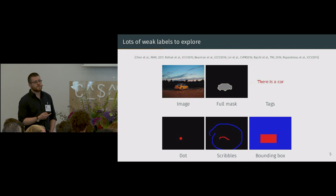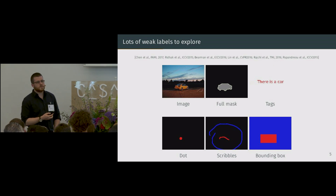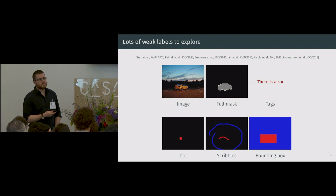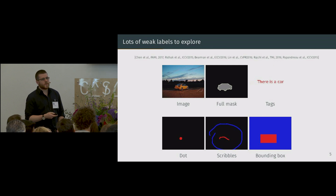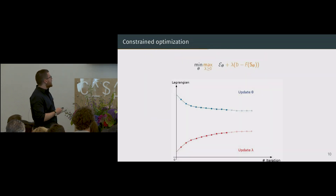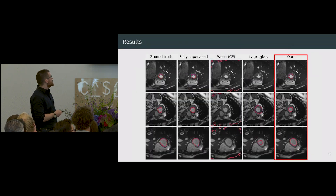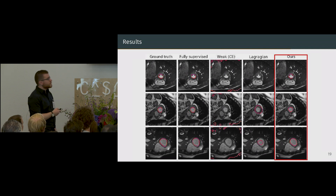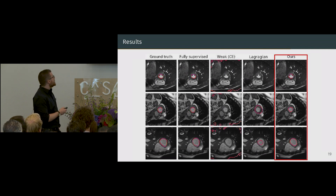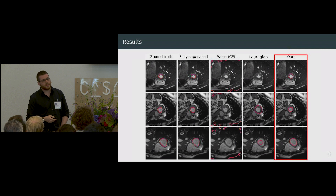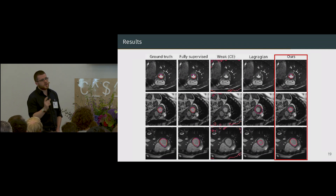A question about whether imposing a volume constraint implicitly imposes a shape constraint — perhaps the model tends to find circles. In this case, the left ventricle is already a good circle to start with. The best way to find out would be to try on another dataset that is not as round, and then we will see.